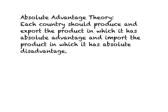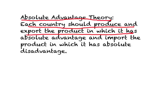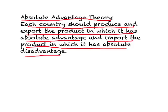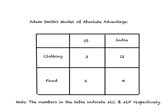According to Adam Smith's absolute advantage theory, each country should produce and export the product in which it has an absolute advantage, and import the product in which it has an absolute disadvantage. So the US should produce and export clothing, and India should produce and export food. Thus the US will be importing food from India and India will be importing clothing from the US.